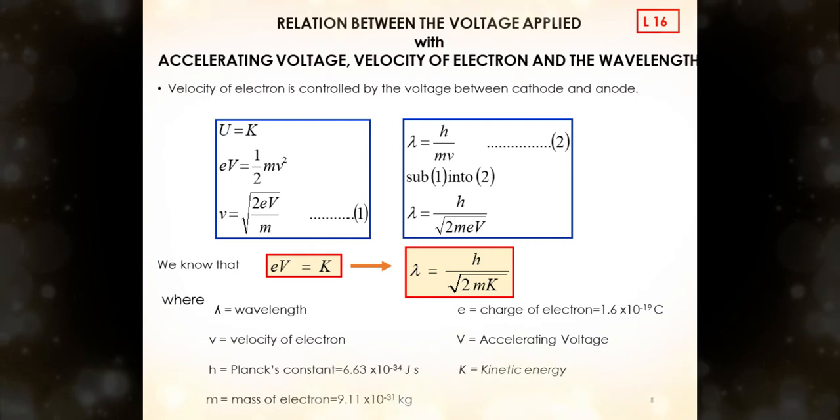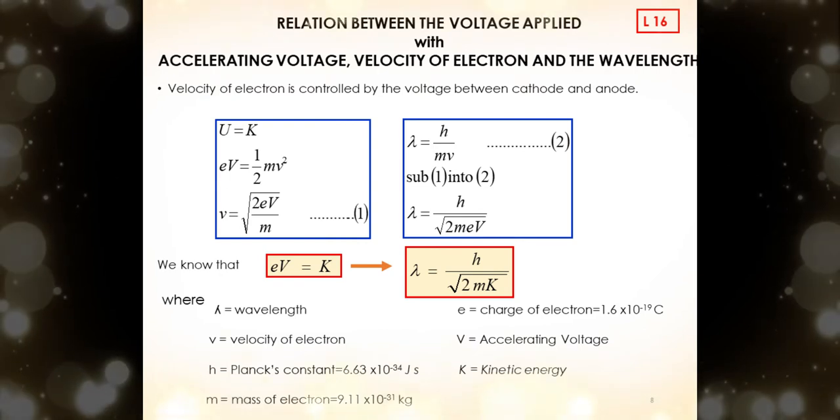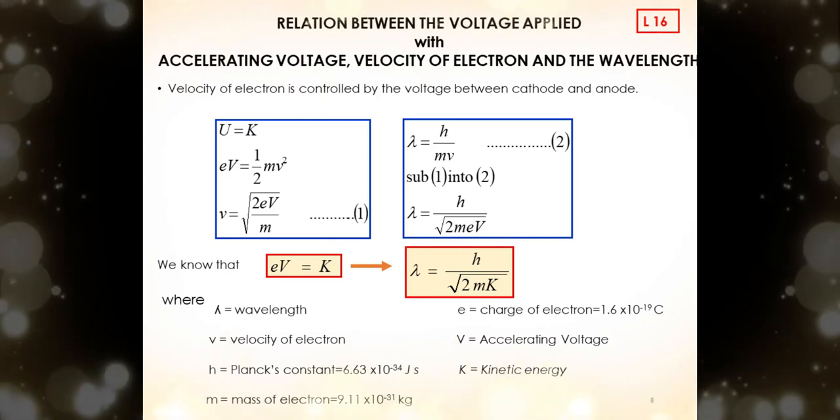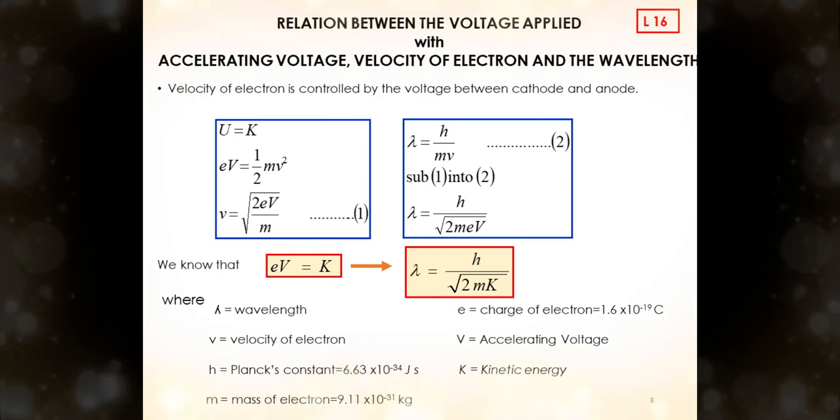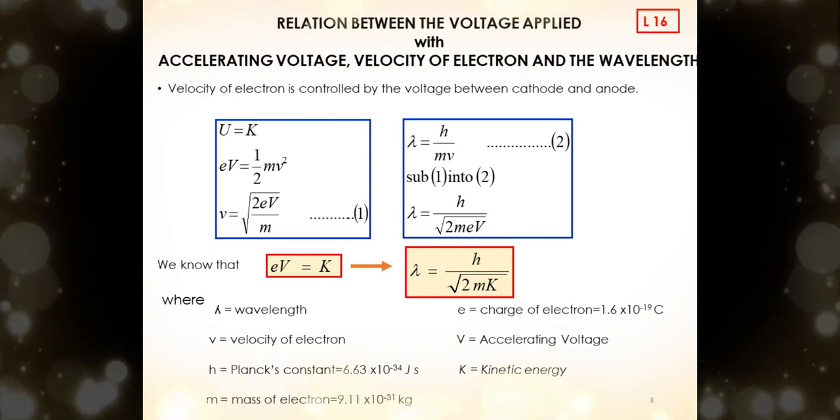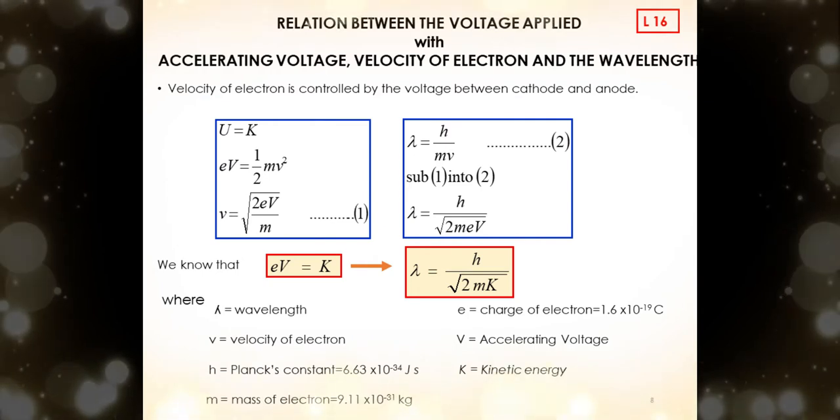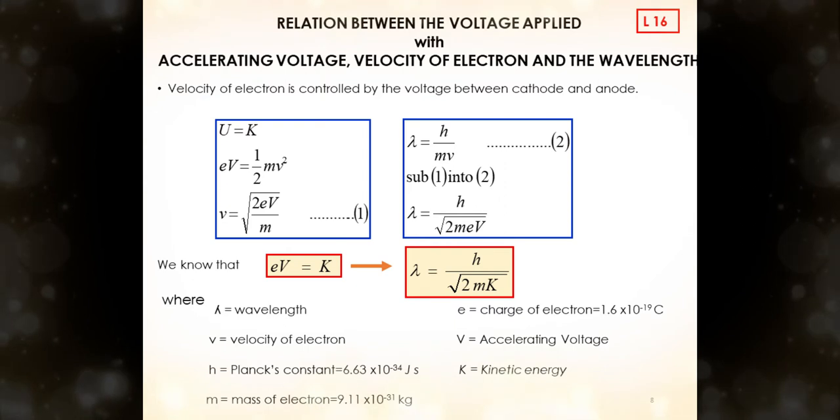Substitute U with e times V, and K with half m times v squared. Rearrange the equation until you get equation 1. Then substitute equation 1 with equation 2, that is lambda equals h over m times v. We also know that e times V equals K, so we can substitute this equation and get new equation as shown here: lambda equals h over square root of 2 m e V.